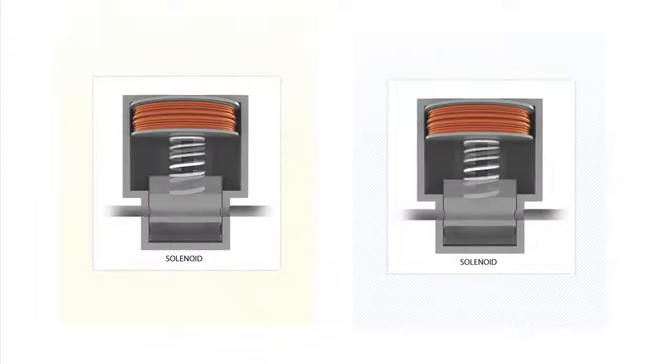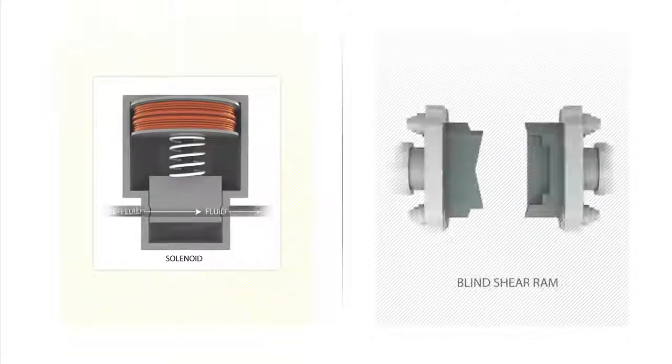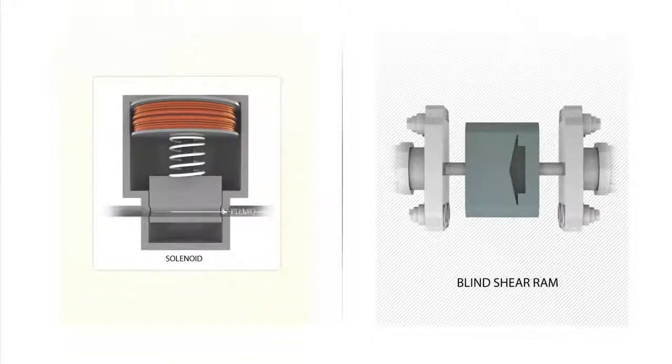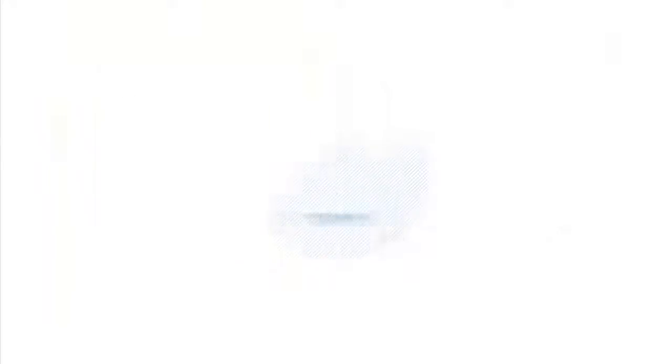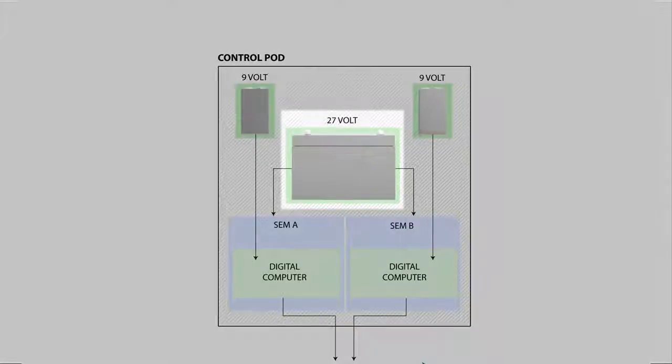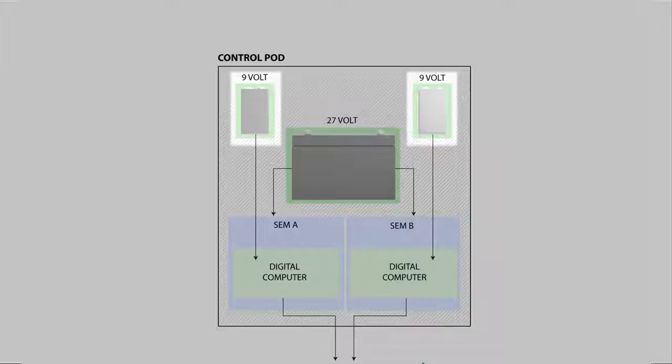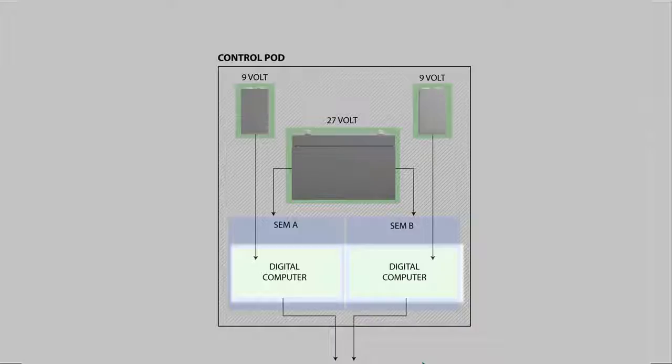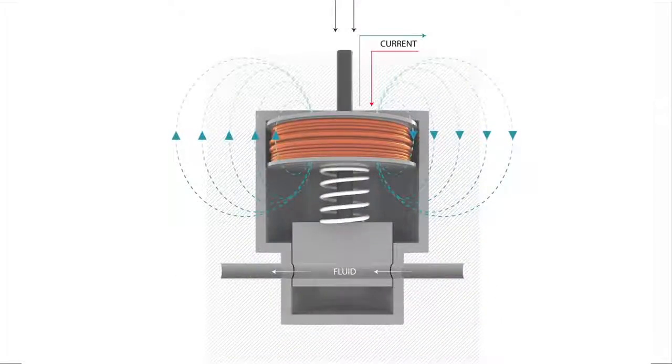When activated, the solenoid valves controlled important BOP functions, such as closing the blind shear ram. If electrical power from the rig was lost, as happened on April 20, 2010, both the Yellow and Blue control pods contained backup twenty-seven-volt and nine-volt batteries to power emergency functions. The nine-volt batteries powered computers that would activate the solenoid valves, which were powered by the twenty-seven-volt batteries.